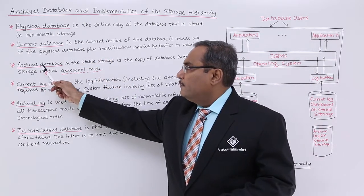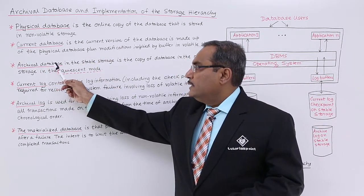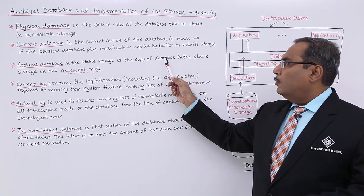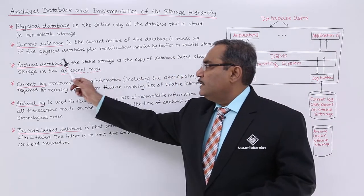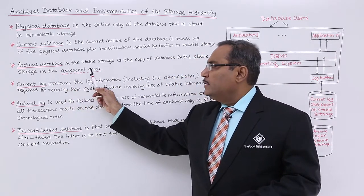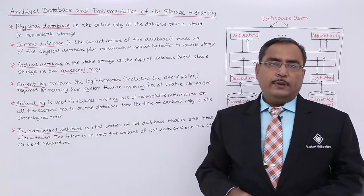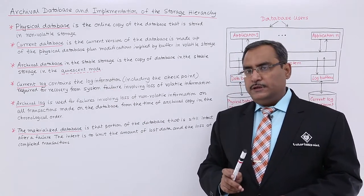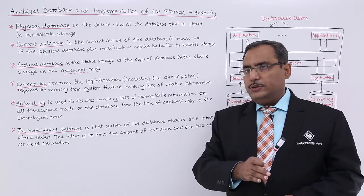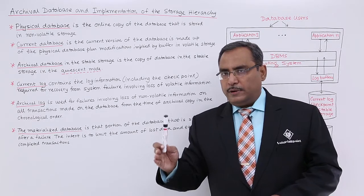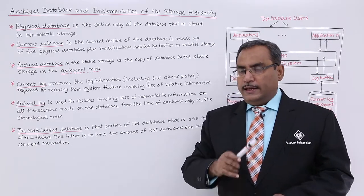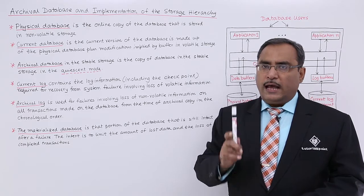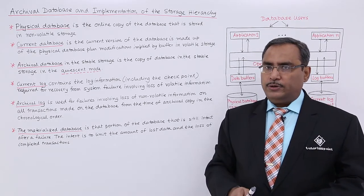The next one is the archival database. It is the copy of the database in stable storage in the quiescent mode. This mode indicates that when the database was transferred from volatile storage to non-volatile permanent storage, no transaction was allowed to get executed during that period of time.